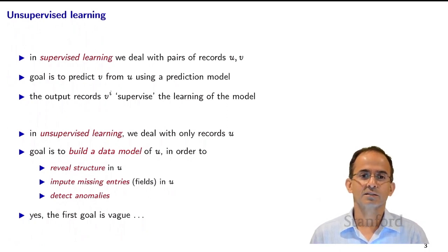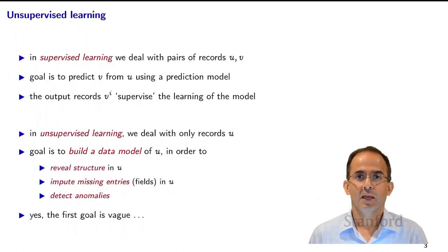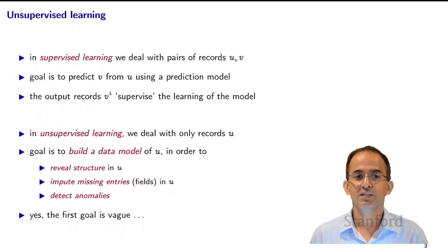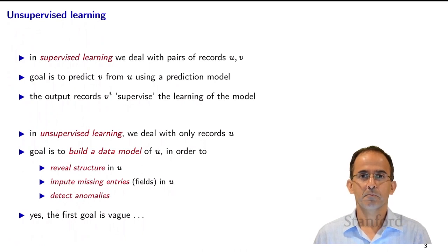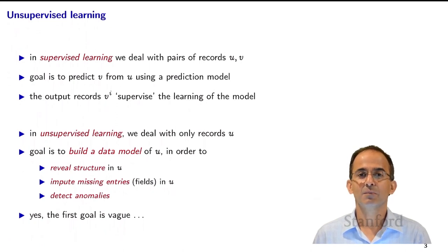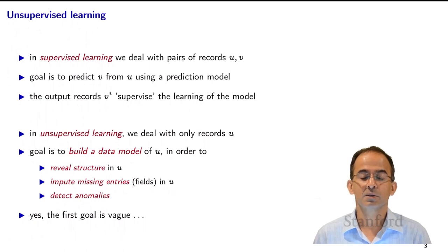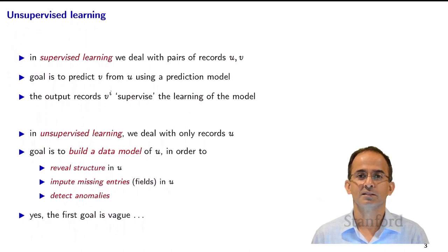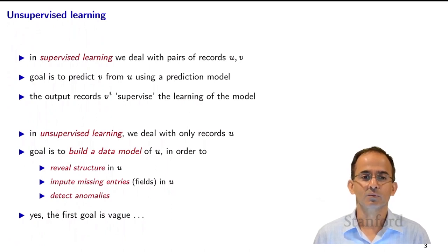The idea in supervised learning is that we have pairs of records U and V, and we want to learn a model which predicts V given U. It's called supervised learning because the V's are giving us information about what the right answer is in particular cases corresponding to the U's — that's the idea supervising the learning of the model.